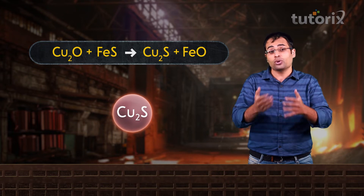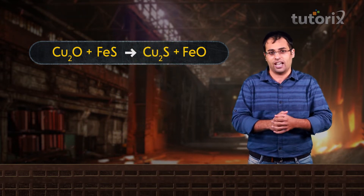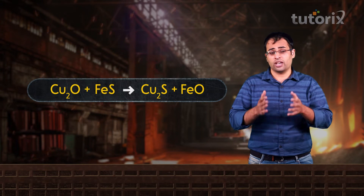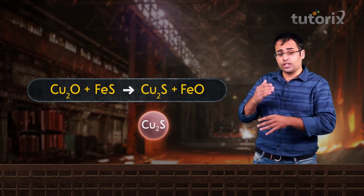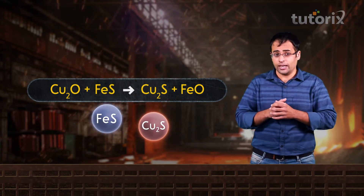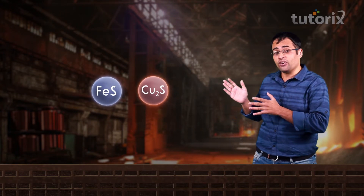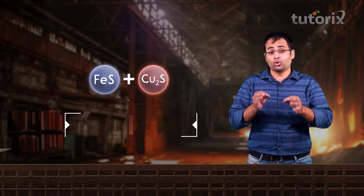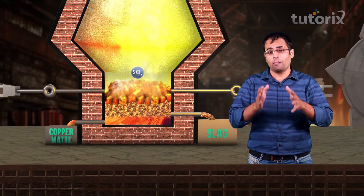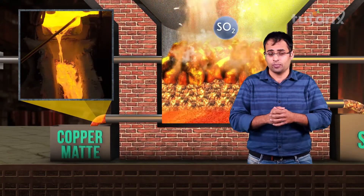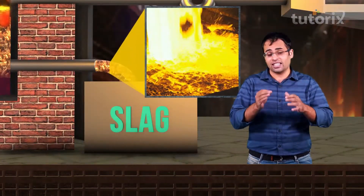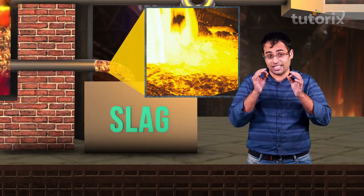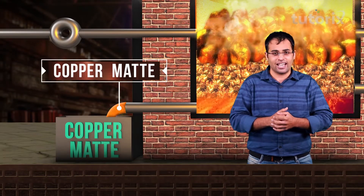After this process, we are left with majorly cuprous sulphide with small amounts of ferrous sulphide. This mixture of cuprous sulphide and ferrous sulphide is given a special name: copper matte. Due to the high temperatures in the furnace, this copper matte melts and collects at the bottom of the furnace. The ferrous silicate slag is insoluble in this copper matte and is less dense, so it floats on top and can be easily separated. This copper matte is then collected.